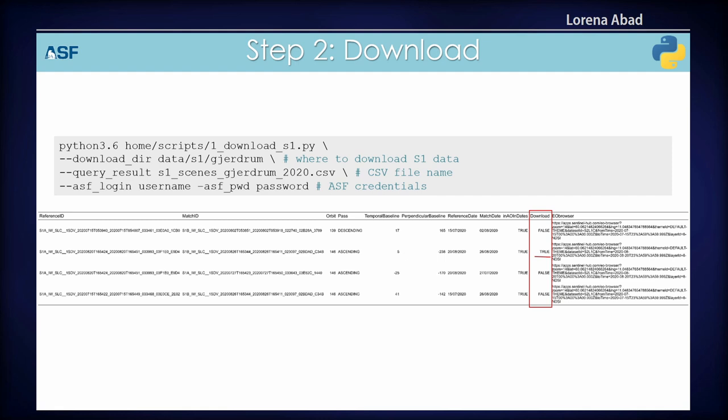Then you download. You have the CSV and a column where you as an analyst change from false to true. You pass this to the next script and everything marked true gets downloaded. Sadly, we have to download the whole image because otherwise SNAP cannot process it. If you have a server, the batch download goes much better.